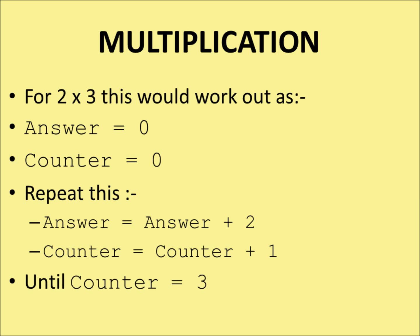Now we can do some checking. We're going to do this loop until the counter becomes 3 — that second number in the multiplication. Counter is 1, it isn't 3, so we go back. We take the old value of the answer, which was 2, add 2 to it making 4, and that becomes the new value of the answer.